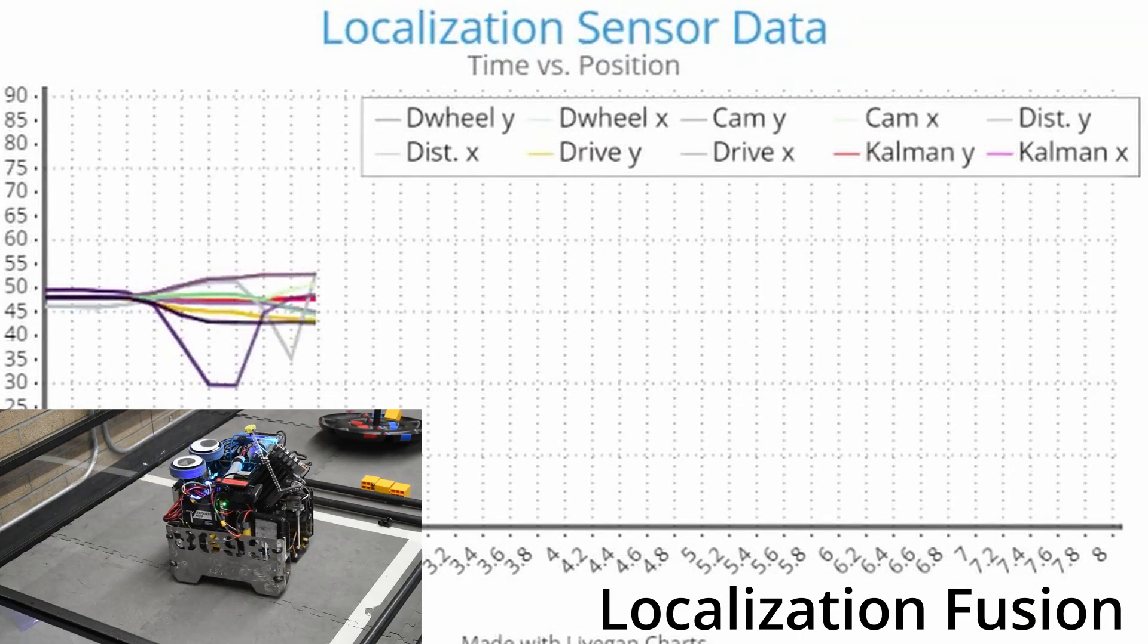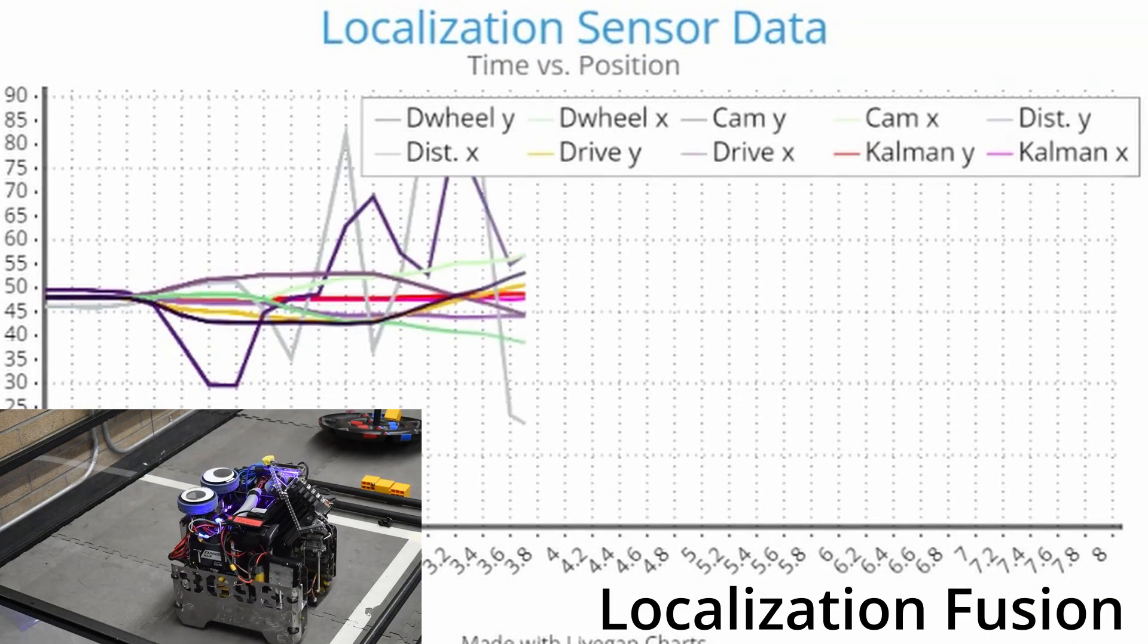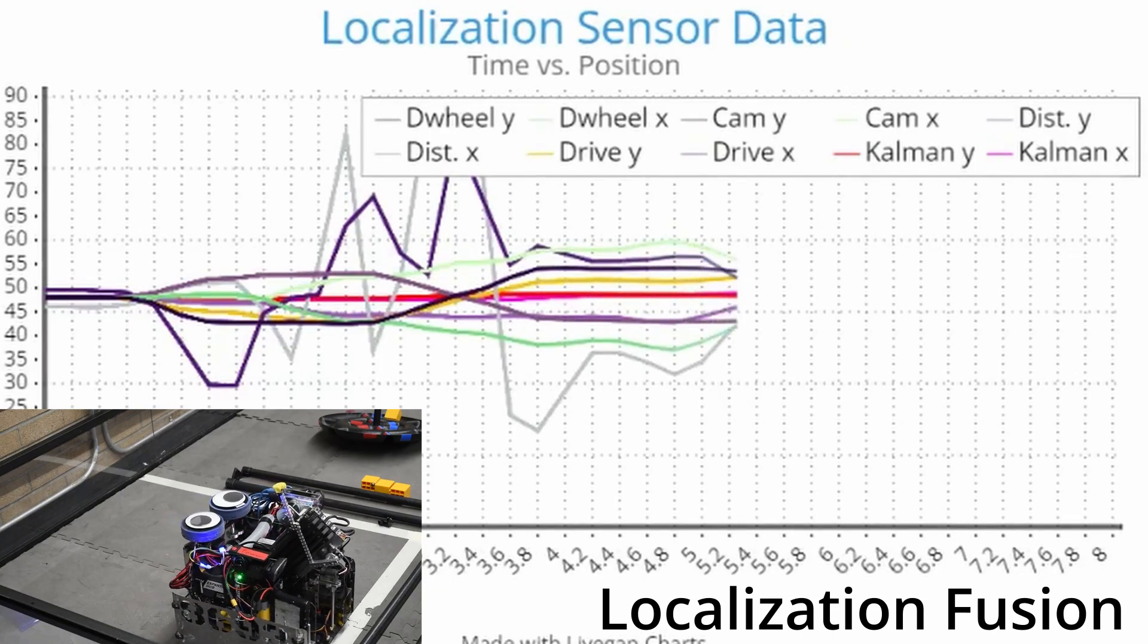We use multiple forms of localization so that we're able to determine the robot's position with a great degree of accuracy.